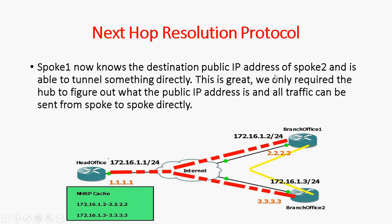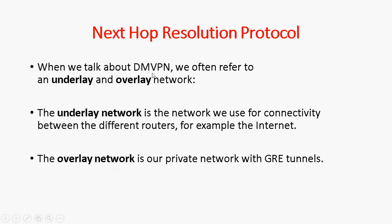Spoke 1 now knows the destination public IP address of spoke 2 and is able to tunnel traffic directly. This is great — we only required the hub to figure out the public IP address, and all the traffic can be sent from spoke to spoke directly. The yellow line in the diagram shows the tunnel between branch office 1 and branch office 2. With the help of NHRP, branch office 1 figured out the public IP address of branch office 2 and can now build a direct tunnel between them.